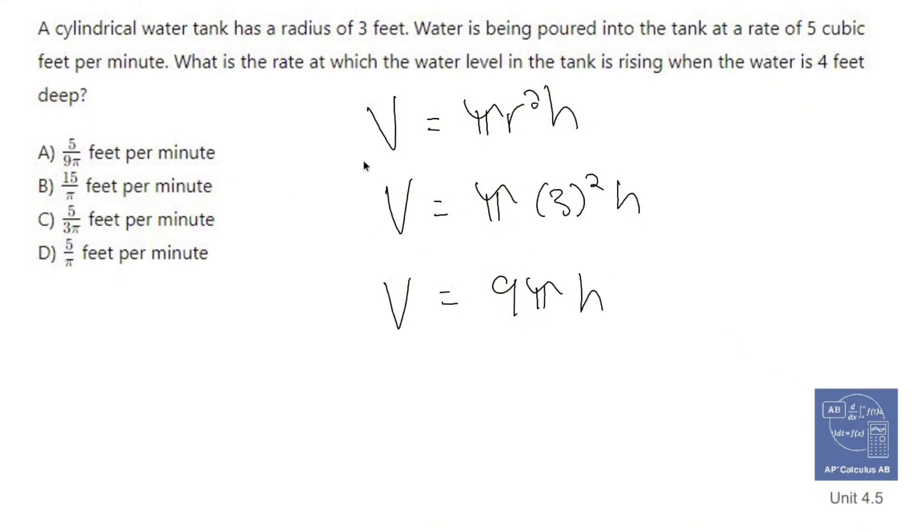Now this is a related rates problem because I'm asking you the rate at which the water level in the tank is rising. So what I want to find is dh dt. And I know that I am pouring water in at a rate of 5 cubic feet per minute. So I know that the volume is increasing dv dt is equal to 5.